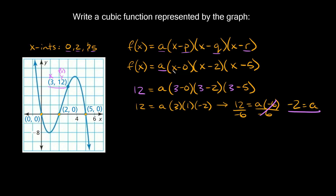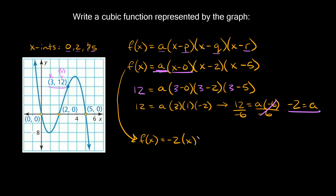So we're going to plug in negative two for a. This brings us to f(x) = negative two times x minus zero, which we can just write as x, because subtracting zero doesn't change the value. So we have f(x) = negative two times x times (x minus two) times (x minus five).